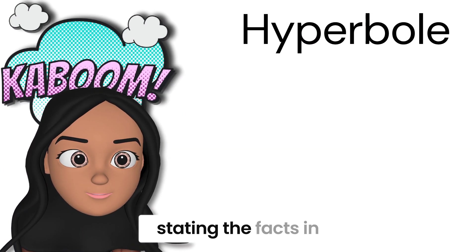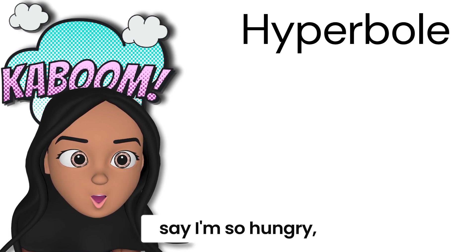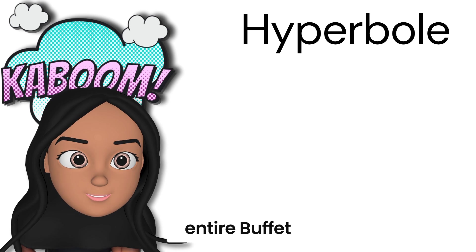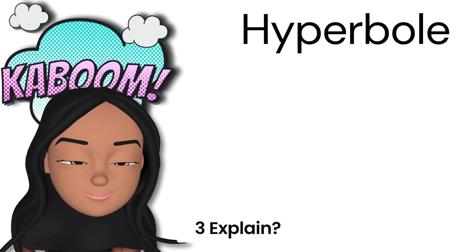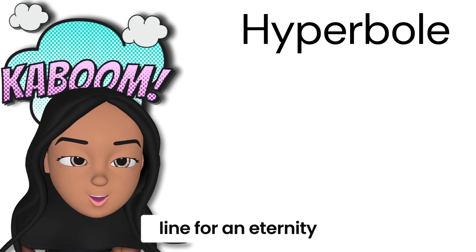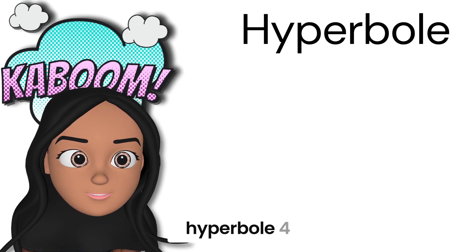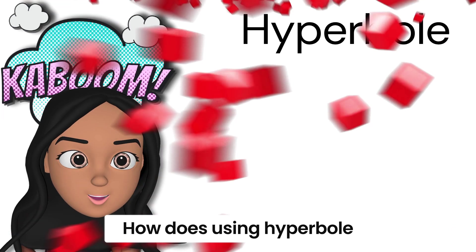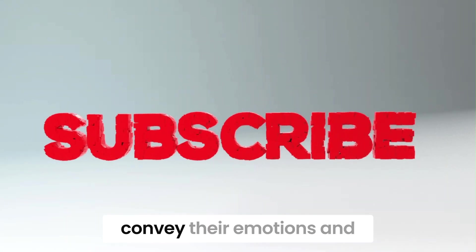Two: if I say 'I'm so hungry I could eat an entire buffet,' what kind of literary device am I using? Three: explain why the statement 'I've been waiting in this line for an eternity' is an example of hyperbole. Four: how does using hyperbole help writers and speakers convey their emotions and feelings more effectively?